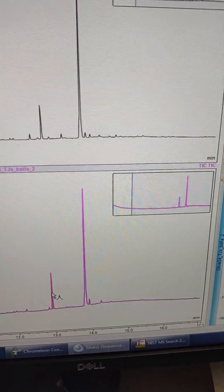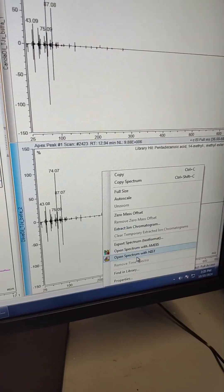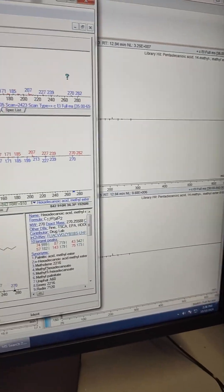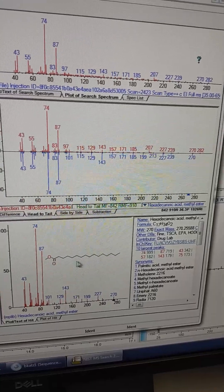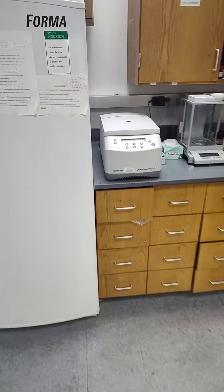So then this other one really early here that is in both of them as well. Another reason why I don't really trust this GCMS data. And that's palmitic acid. Again with the methyl ester. This is fully saturated palmitic acid. No double bonds.